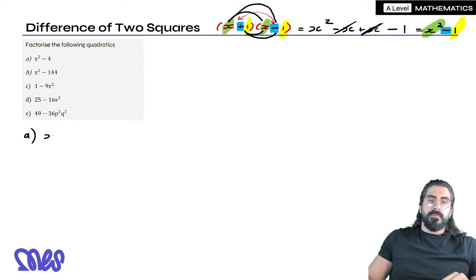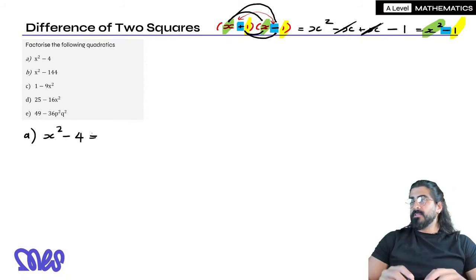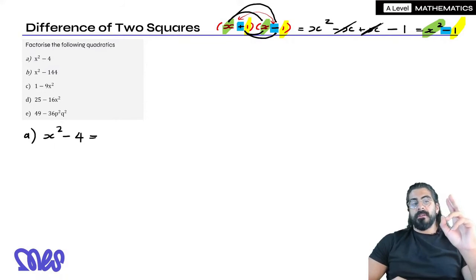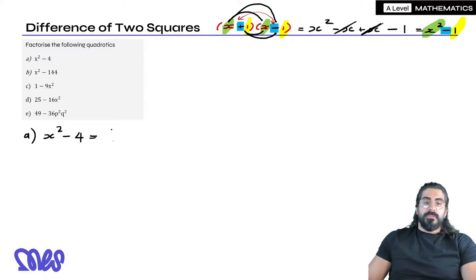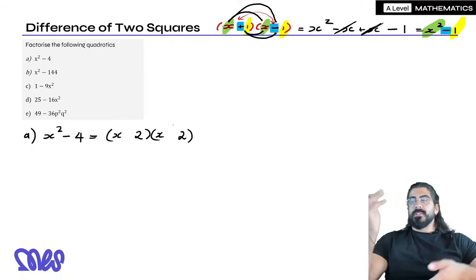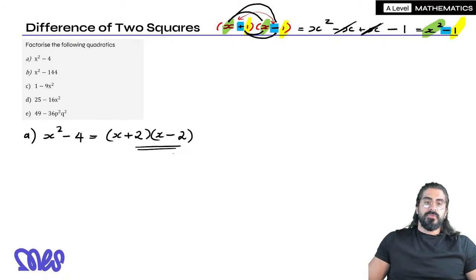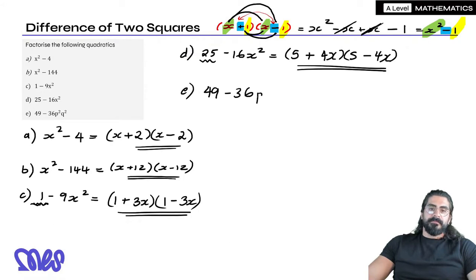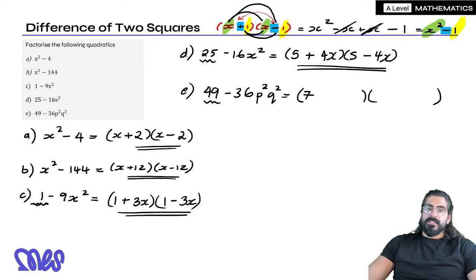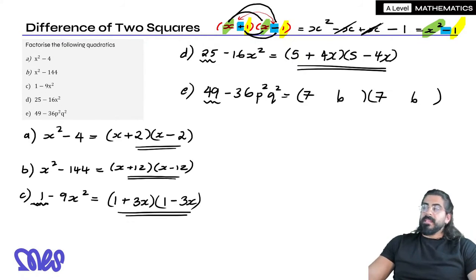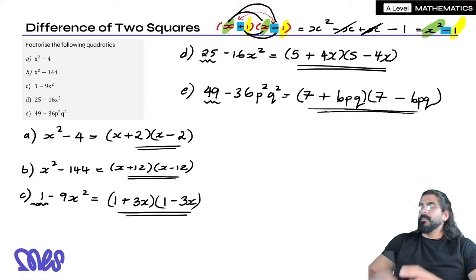So when I see x squared minus 4, I notice x squared is a square number and 4 is a square number, and we're taking the difference between the two. So I do two brackets: x and x, and since 2 squared gives 4, I put 2 and 2. Then we use plus and minus so the middle terms cancel — that's the solution. Similarly for 49p squared minus 36q squared: 49 gives 7 and 7, 36 gives 6, p squared gives p, q squared gives q, and we have plus and minus.